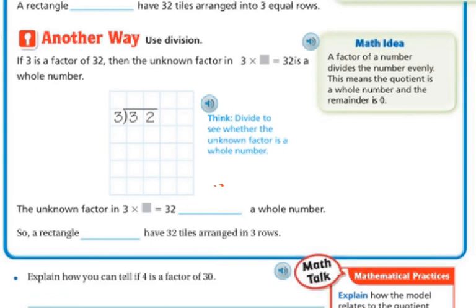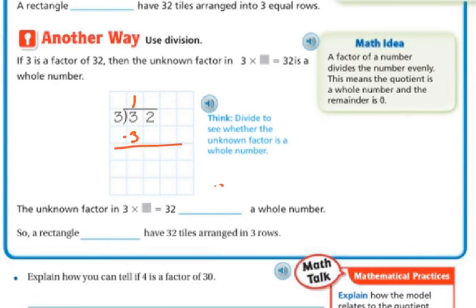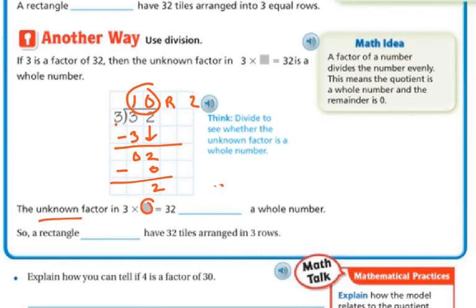Another way besides doing the model is to use division. If 3 is a factor of 32, then the unknown factor in 3 times the unknown factor equals 32 is a whole number. Divide to see whether the unknown factor is a whole number. 3 goes into the 3 tens one time evenly, we subtract and get 0, bring down the 2. 3 cannot go into 2, so you have a remainder of 2. The unknown factor is not a whole number, so a rectangle cannot have 32 tiles arranged into three equal rows.